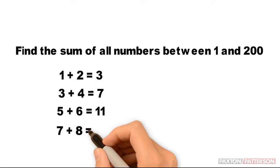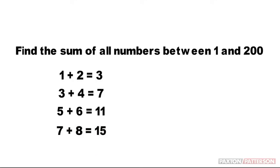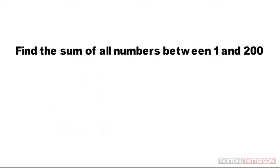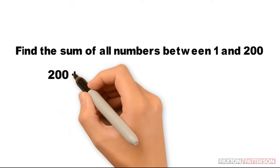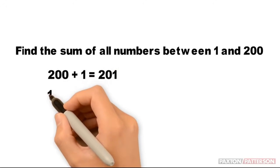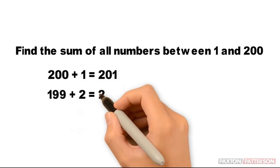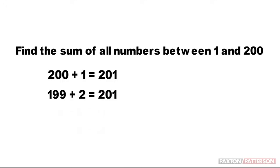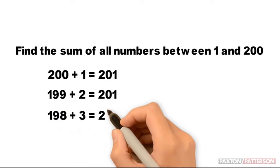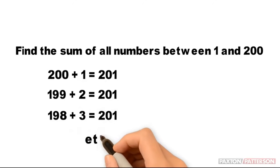7 plus 8 equals 15. This is going to take forever, and it's really hard to keep track of in your head. There's got to be a better way. Let's try a different set of combinations: 200 plus 1 equals 201. 199 plus 2 equals 201. 198 plus 3 equals 201, etc.